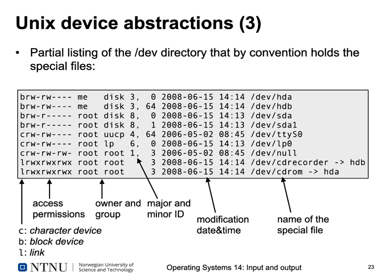What do these special device files look like in the file system? Here is a partial listing of the /dev directory, which by convention holds the special files. This almost looks like a regular file listing — each file has nine bits of access permissions for the owner, group, and others. R is read, W is write, and the third bit indicates executable. Executable device files are uncommon, so device files usually only have read and write bits. The first character indicates B for block device or C for character device. You can also have symbolic links, which are just other names for devices.